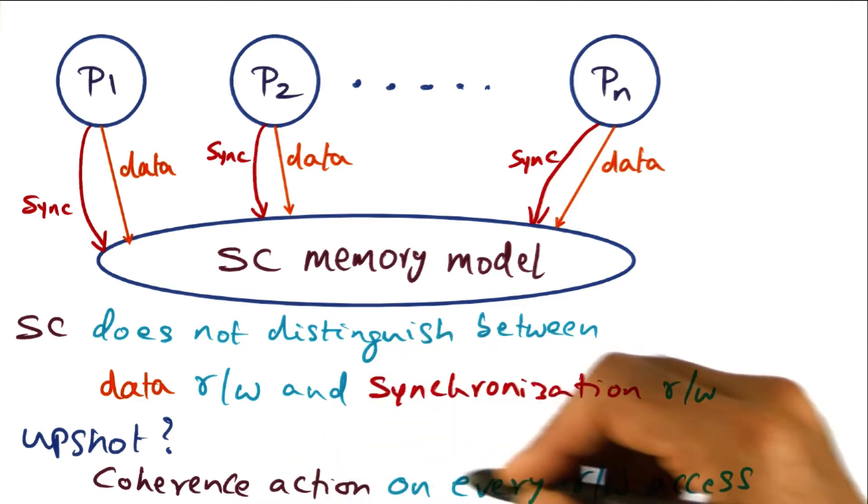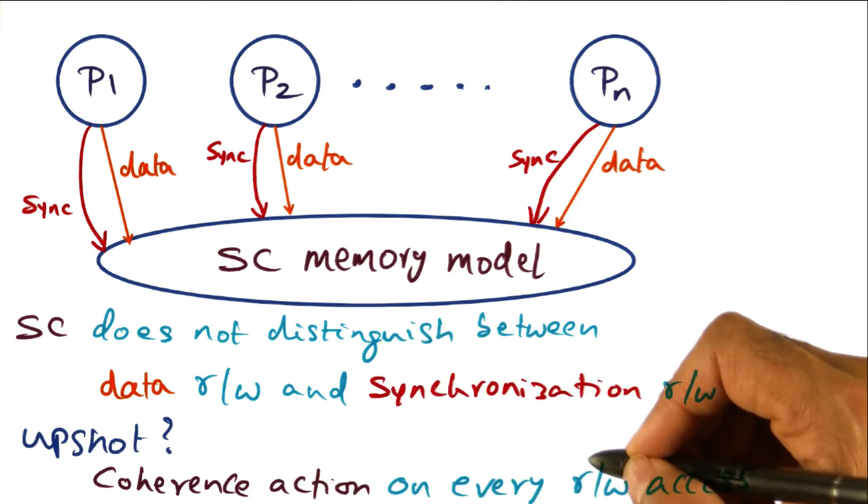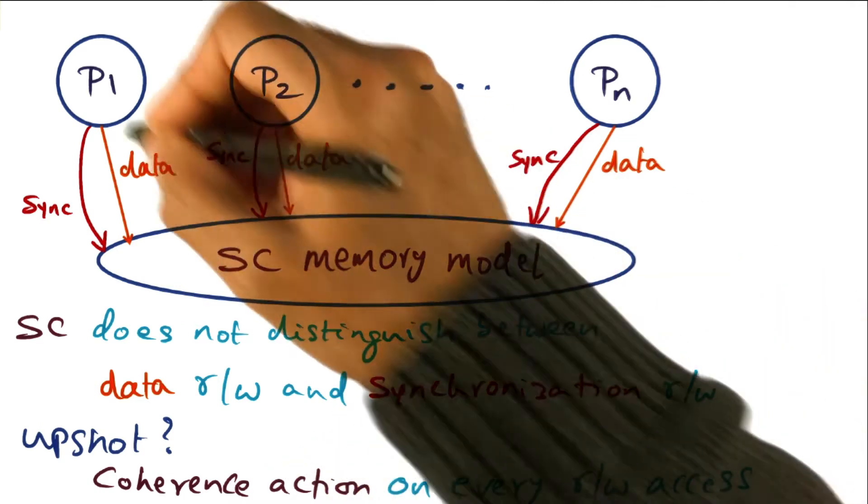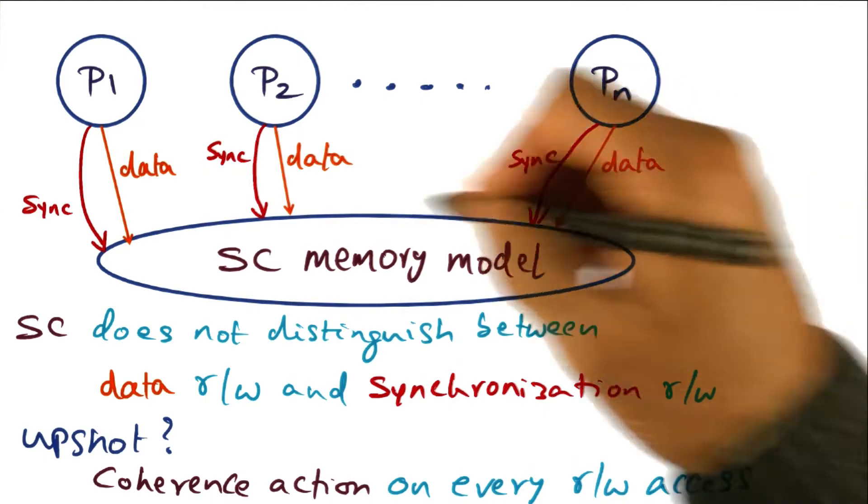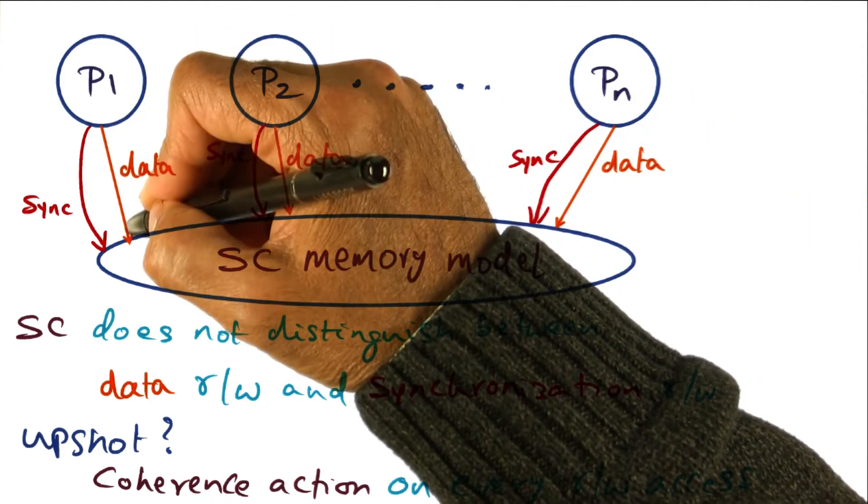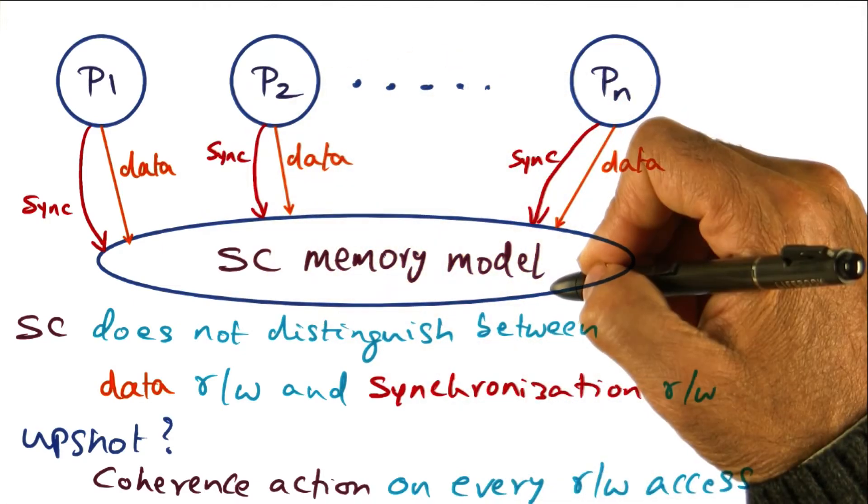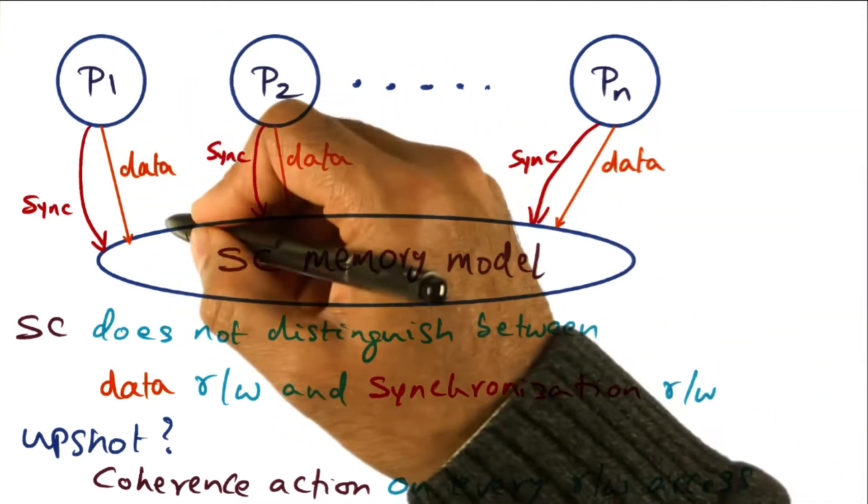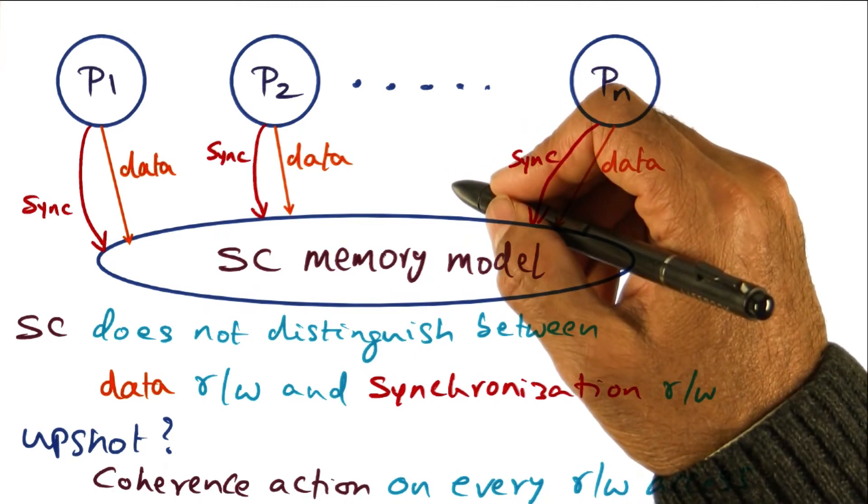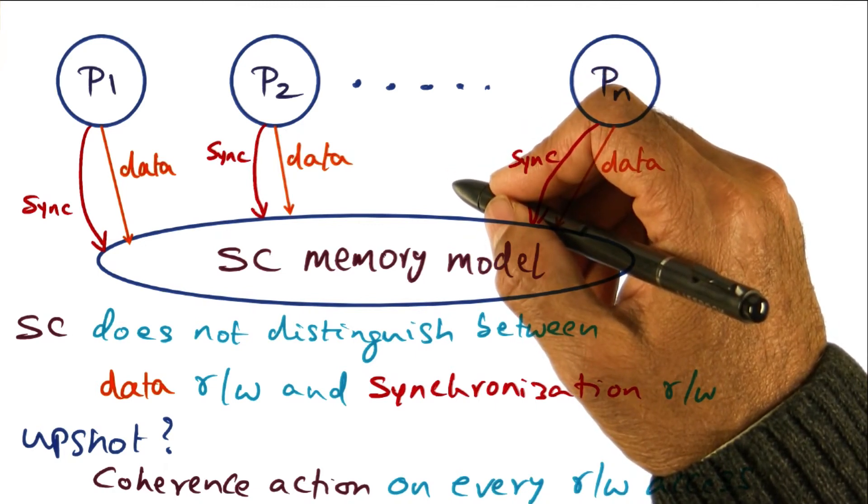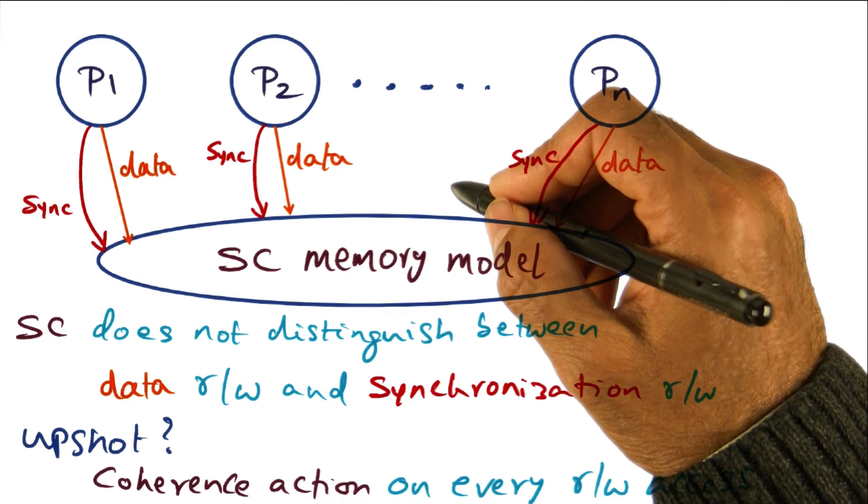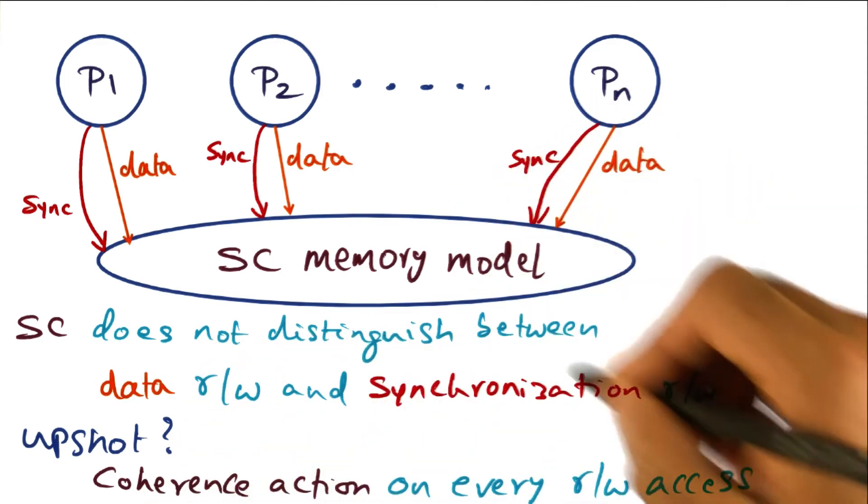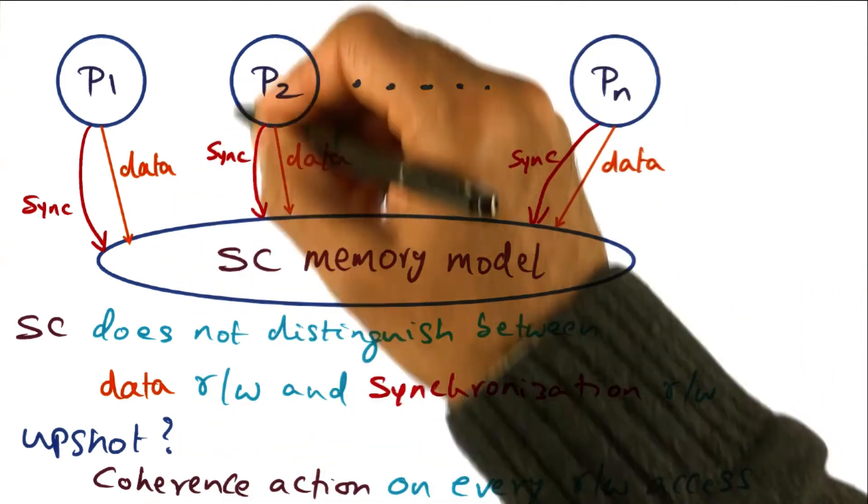So the upshot is that there's going to be coherence action on every read-write access that the model sees. If this guy writes to a memory location, then the sequentially consistent memory model has to ensure that this write is inserted into the global order somewhere. In order to insert that in the global order somewhere, it has to perform the coherence action with respect to all the other processes.